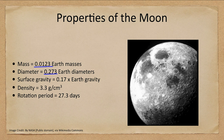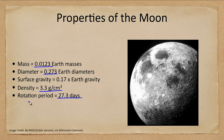Its surface gravity is much less — just 17% of Earth's — and its density is also lower. Density we don't give relative to Earth; it's 3.3 grams per cubic centimeter. The rotational period is 27.3 days. Now, previously we talked about the cycle of the moon being 29.5 days — that is the cycle of phases relative to the Sun. The actual rotation period, or sidereal period, is 27.3 days.